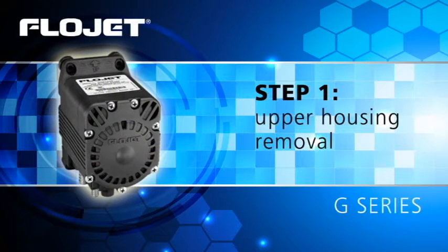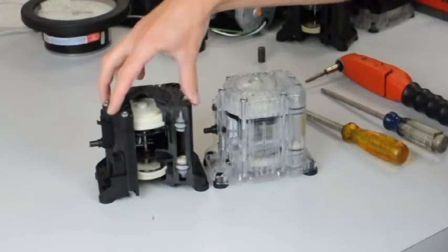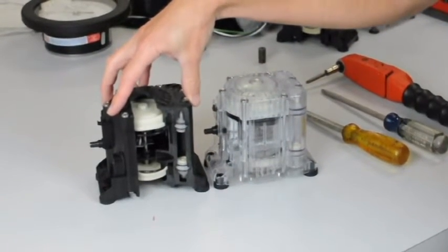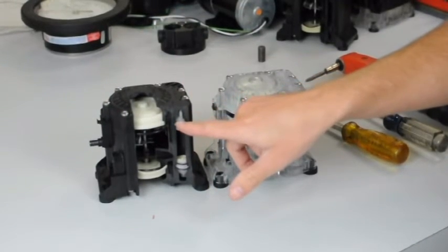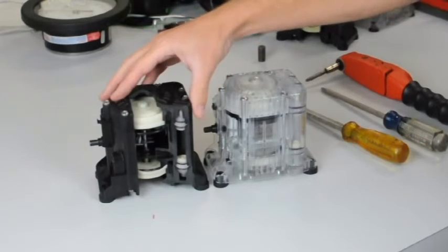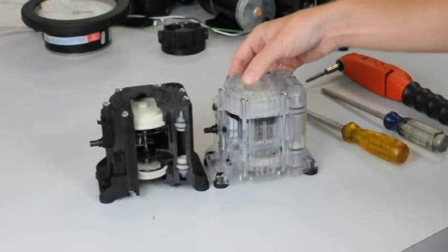Now the first step is to remove the upper and lower body housing, that's this piece right here. Once we take that off it'll give us access to the diaphragms and to the check valves. Now I have the cutaway here so you can see, but we're going to actually be working on this clear pump.